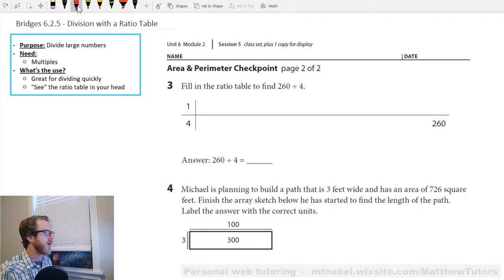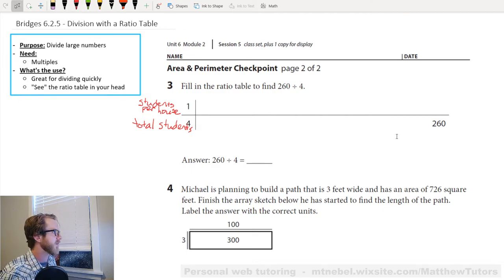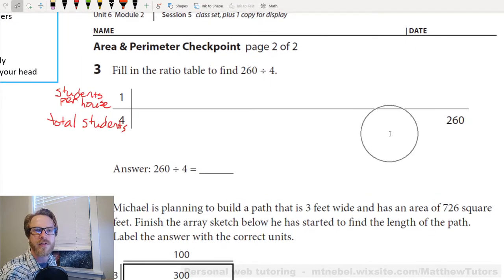So, what would this mean down here on our ratio table? It means if we have four students total, total students, this would mean we have one student per house. So we'll say students per house. And I know I'm squeezing this in here, but just keep that in mind, all right? In fact, I'm going to zoom in just so we can make this a little bit easier here. Hopefully that helps.